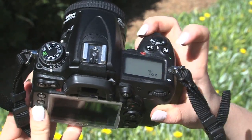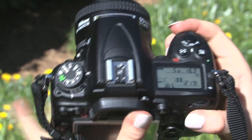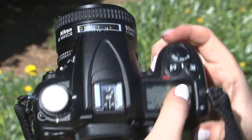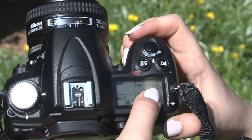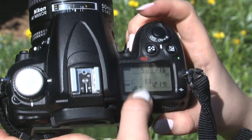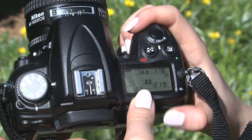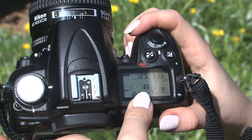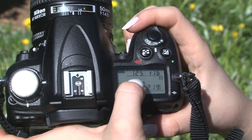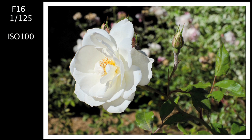So let's try to take some pictures using the Sunny 16 rule. Let's check our ISO first — I have my ISO set to 100. I have my camera in manual mode, of course. Then I'll set my aperture to f/16, and I'll set my shutter speed to 1/100 or 1/125, depending on where your camera goes. Here is the picture I took using the Sunny 16 rule — as you can see, the exposure is good, with good details in the whites and nothing overexposed or underexposed.